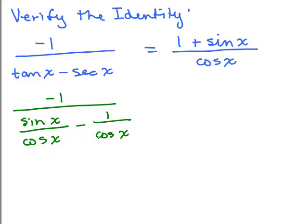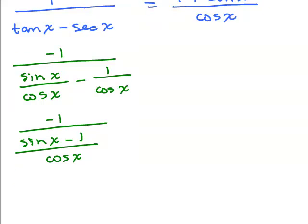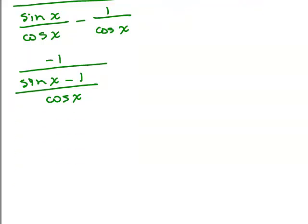Well, hey, that's nice. I have a common denominator. So this is negative 1 over sine x minus 1 all over the cosine of x. Now, I'm going to write down where we're trying to go so we remember. And then I can multiply by the reciprocal, so I have a negative 1 times the reciprocal of what's in this denominator, cosine x over sine of x minus 1.